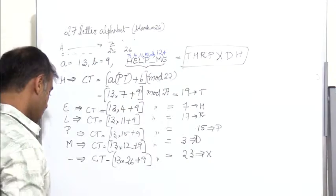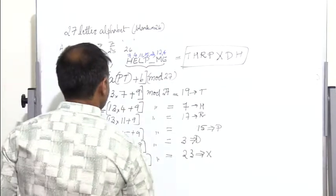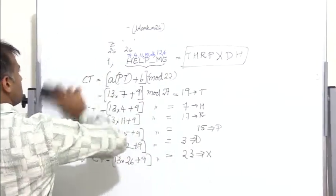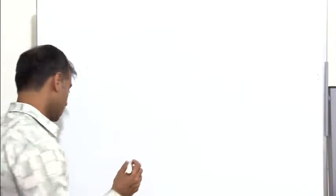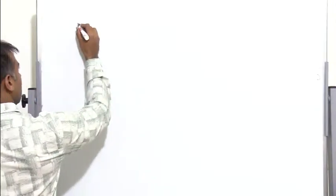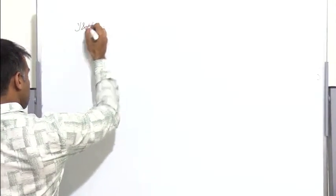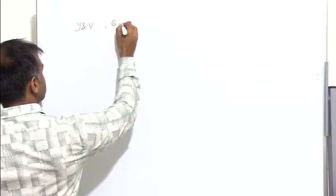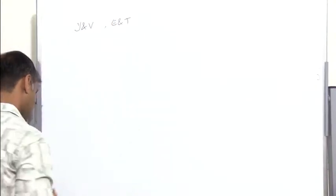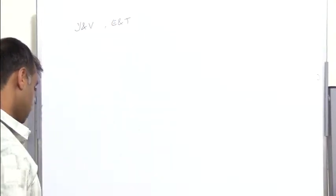Let's take another problem. In a long string, the frequently occurring alphabets are y and v. If they correspond to e and t, read the following message.